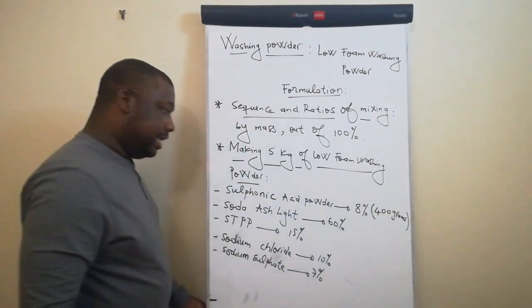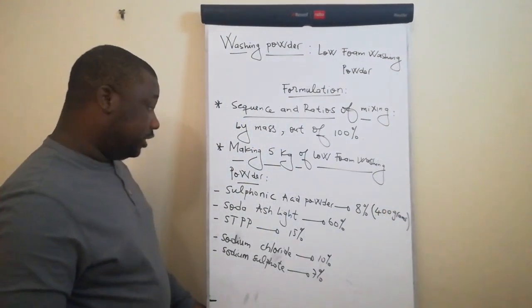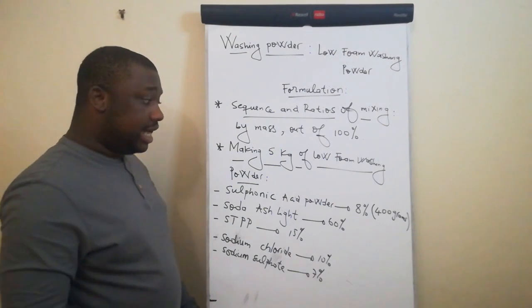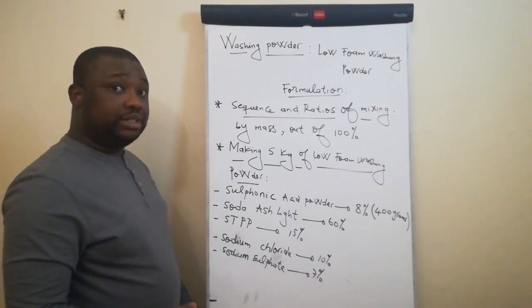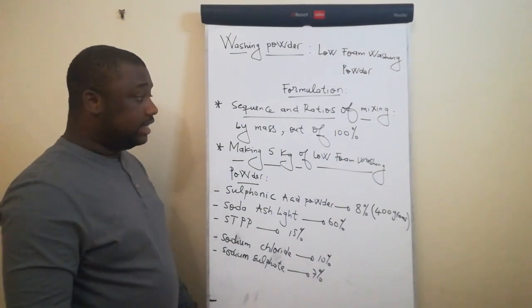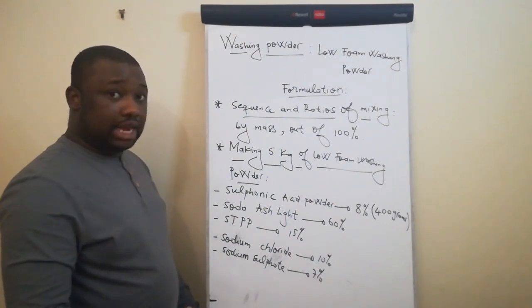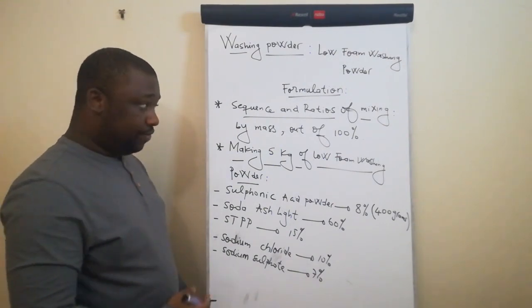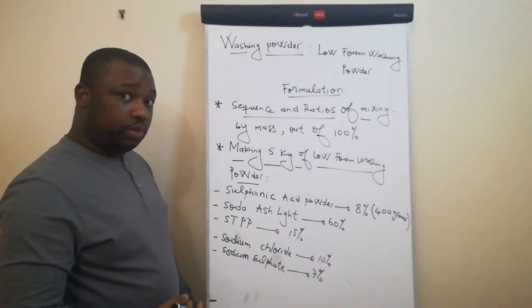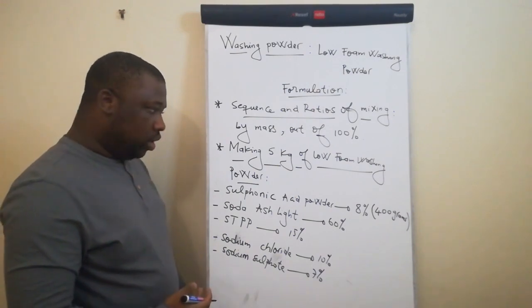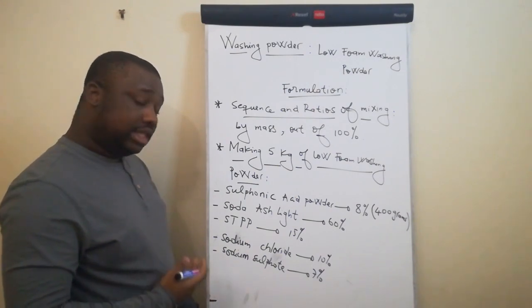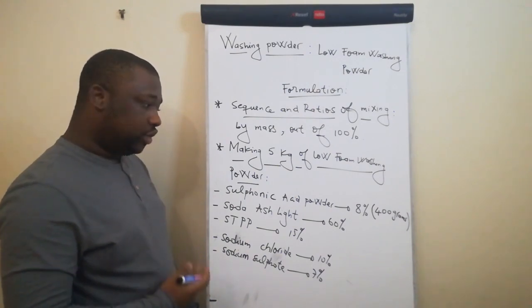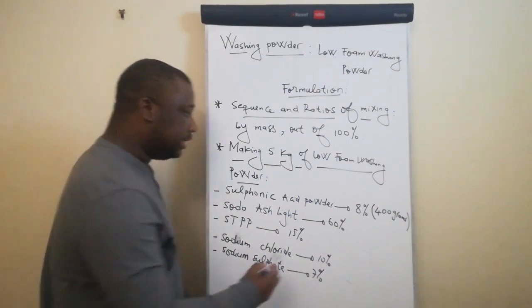The next ingredient is soda ash light. This should be 60% of the total mass. Out of the 5 kg that we're manufacturing, we're going to need 3 kg of soda ash light.